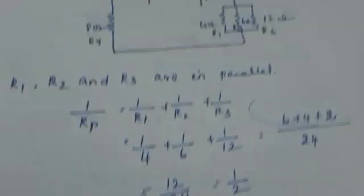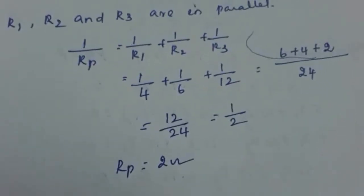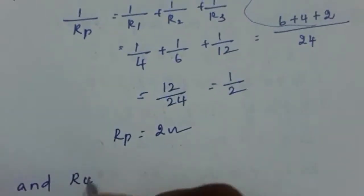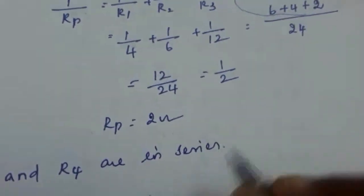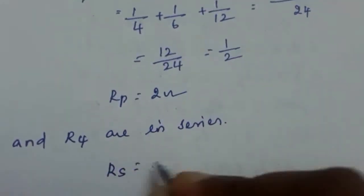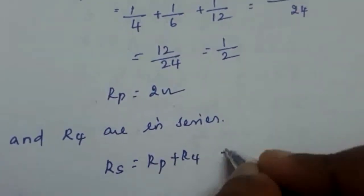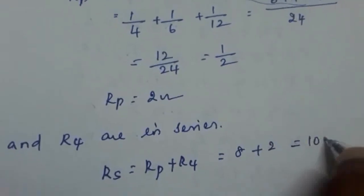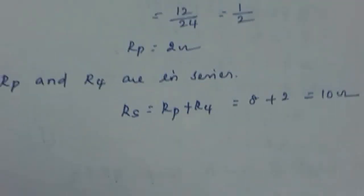Now Rp and R4 are in series, so Rs = Rp + R4. Rp is 2 ohm and R4 is 8 ohm, so Rs = 2 + 8 = 10 ohm.